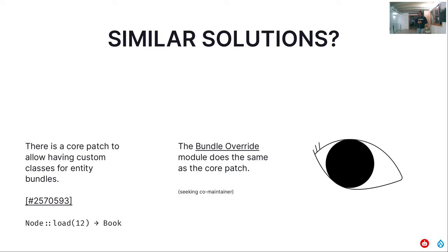This concept is not unique — there is even a core patch aiming toward this. Currently when you do node_load(12), you always get the node class regardless of node type. What this patch will do — and it really looks like it's going to land — is let you specify: for bundle book, get this class. When you do node_load(12), it returns an instance of that class. That is exactly what the Bundle Override module was doing before, and they're seeking a co-maintainer.